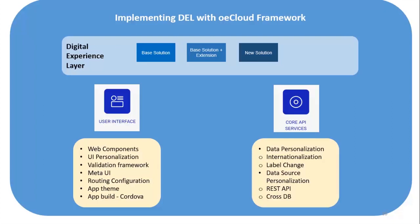One more great feature of the OECloud DEL layer is that you can build many screens rapidly with Meta UI. Meta UI is a concept where it borrows the model definition and based on that, automatically generates forms, internally making use of all the themes and CSS available. Meta UI also enforces that all validation rules are applied properly, and additional validations can also be built as part of the DEL layer requirements. It is possible to configure routes in a user-friendly manner, app themes can be generated and reused, and for responsive pages, one can make use of Cordova-based applications.